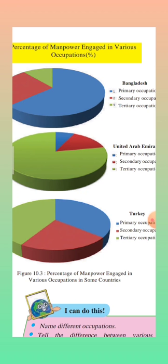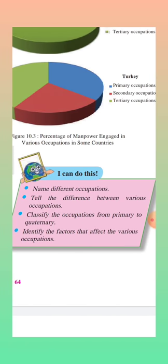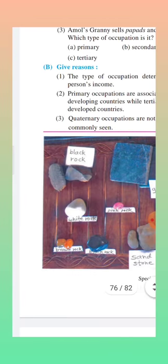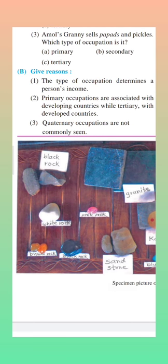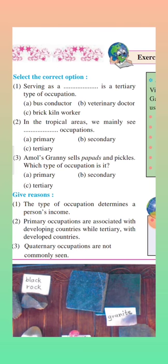Turkey's primary, secondary, and tertiary occupations are balanced. So we can understand that the United Arab Emirates is a developed country and Bangladesh is a developing country. We have studied primary, secondary, tertiary, and quaternary occupations — quaternary occupation needs expertise and special skills. Students, we have completed our lesson on human occupation. Read this lesson and try to solve the exercise. Goodbye.